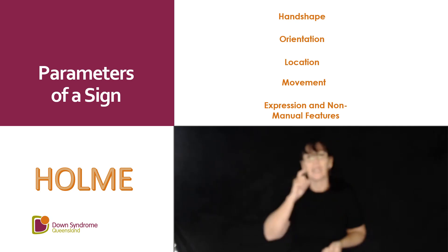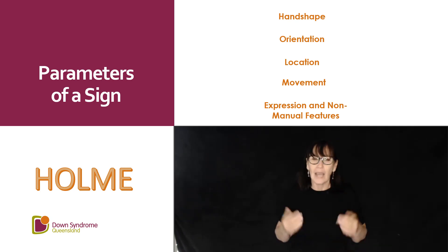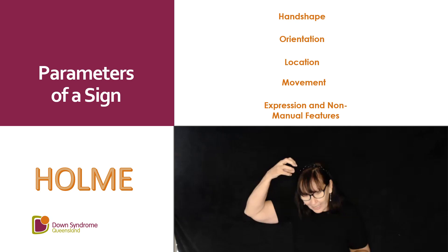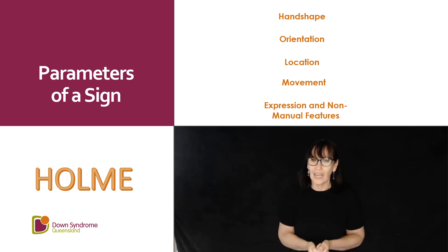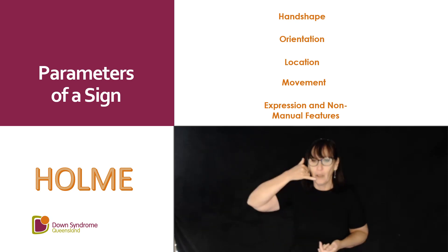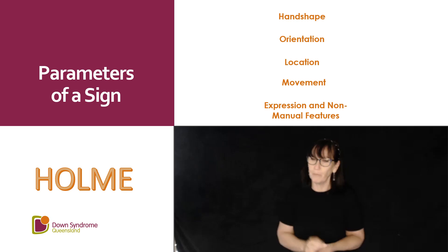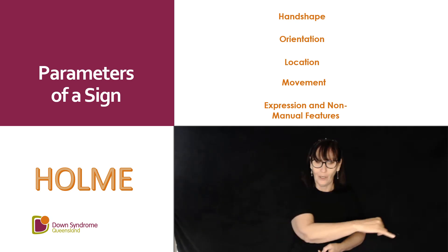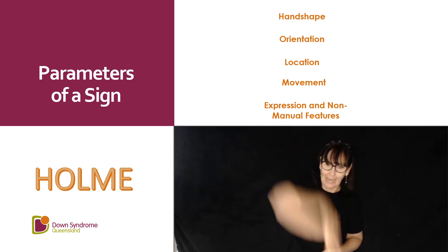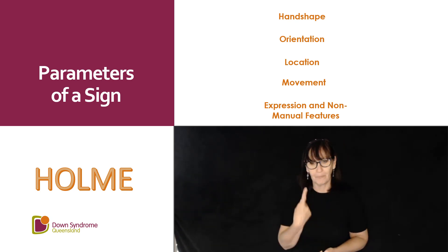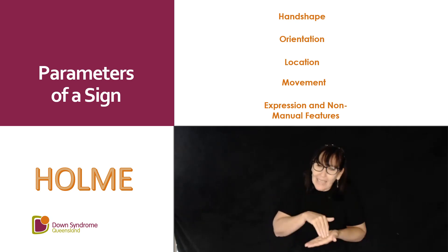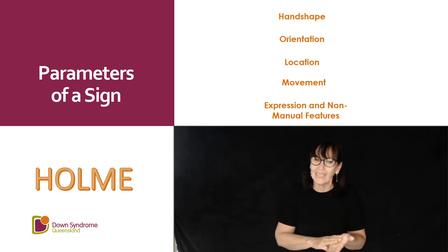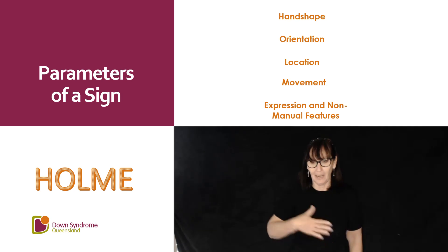Signs that touch the body are generally easier to learn than ones that do not touch the body, especially those out of our eyesight such as 'shower' and 'sun'. Location can change the meaning of a sign such as 'phone' and 'plane'. The movement can also change the meaning of a sign such as 'which' and 'plane', or tell a story — 'phone' and hanging up the phone. Our expression and non-manual features are the tone and add meaning to the sign. Some signs have the same HOME but the E changes the meaning, such as 'like' and 'dislike'.